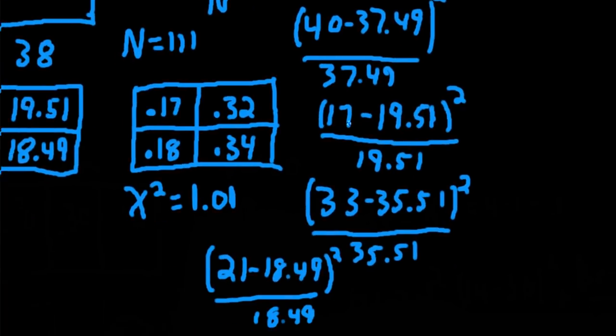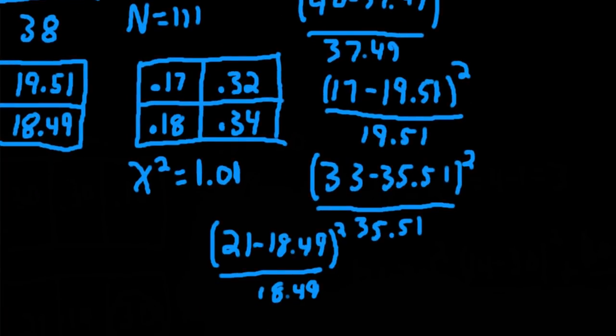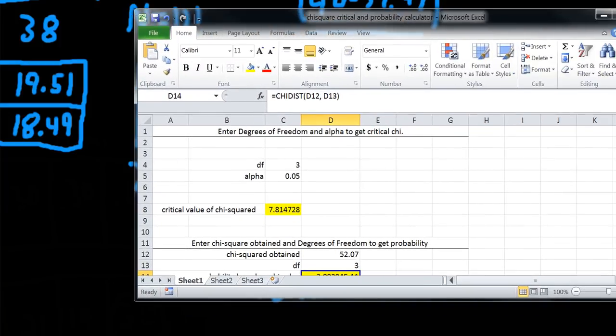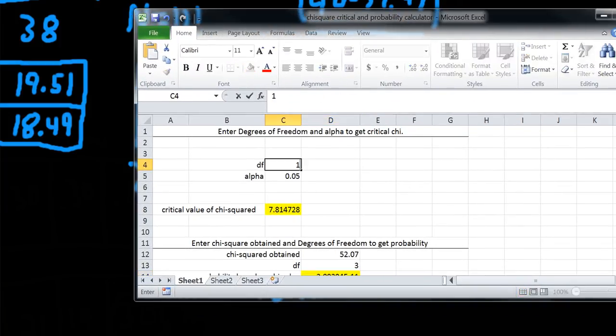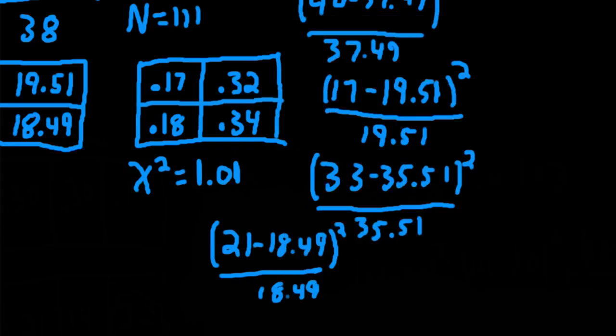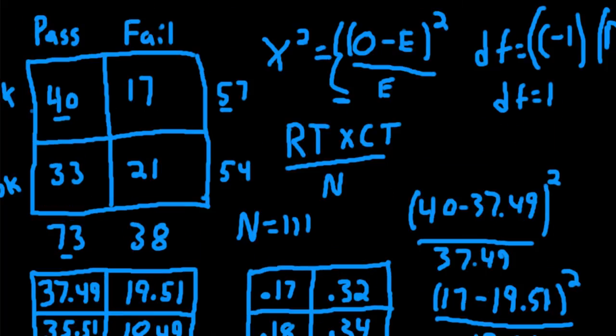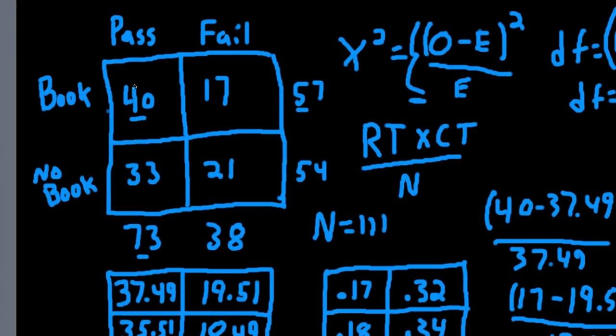So with 1 degree of freedom, and let's say alpha 0.05, we need to get to 3.84. We're nowhere near that. We're at 1. So we would fail to reject the null. And for the time being, we'd retain the null and say we don't have any evidence to suggest that these two variables are related.